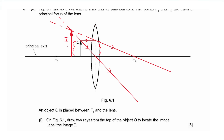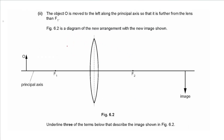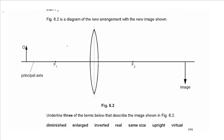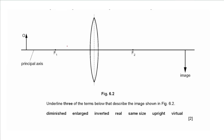Part ii: the object O is moved to the left so it is further from the lens than F1. The new image shown in figure 6.2 is inverted and larger. Underline three terms that describe this image: it is inverted (not upright), enlarged (not diminished), and real — because when the object is further from the focal point the rays actually intersect and do not need to be extended backwards.